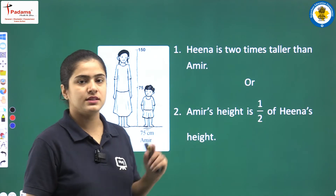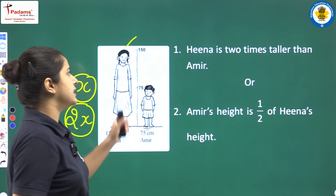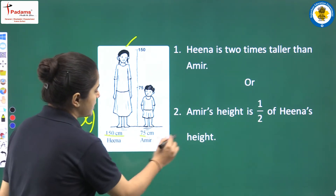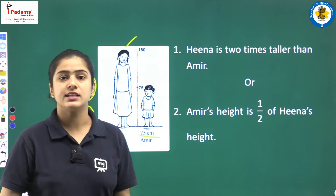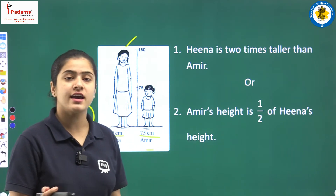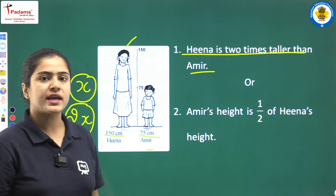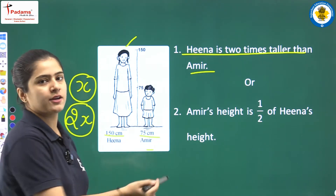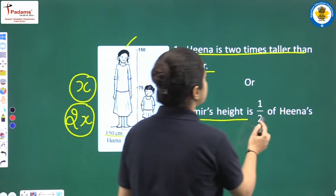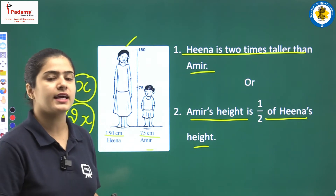Look at this example. She is Hina and he is Amir. You can clearly see that Hina is 150 cm and Amir is 75 cm. From this picture, we can say that Hina is two times taller than Amir — Hina ki height two times hai Amir ki height se. Also, Amir's height is half of Hina's height. So in this way, we can compare quantities. The thing is the same, but how to write it is different.